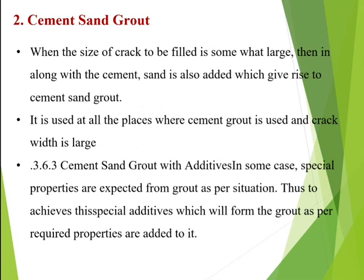The second grout material is cement sand grout. When the size of a crack to be filled is somewhat large, along with cement we should also use sand. The ingredients of cement sand grout are cement, sand, and water. It is used in all the places where cement grout is used, but with larger cracks.